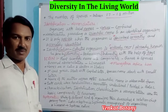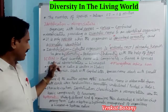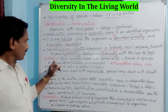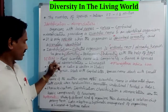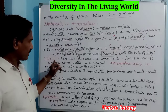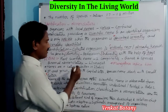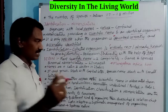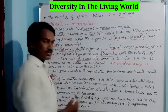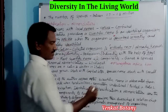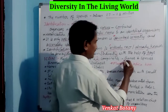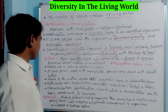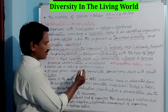We have an organization called ICBN — International Code for Botanical Nomenclature — which provides scientific names for plants. The scientific name consists of two words, two components: the first one is the genus and the second one is the species. This is called binomial nomenclature.